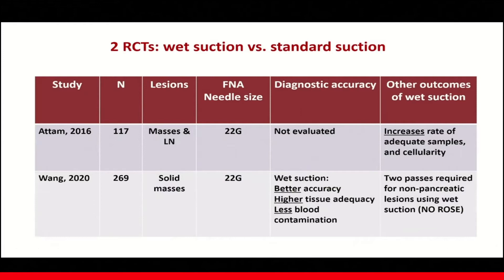In terms of wet suction, 2 randomized controlled trials comparing wet suction with standard suction using 22 gauge FNA needle show that wet suction provides better accuracy, higher tissue adequacy and cellularity, with less blood contamination. One of the studies by Wan showed that only 2 passes are required for non-pancreatic lesions using wet suction with no ROSE.